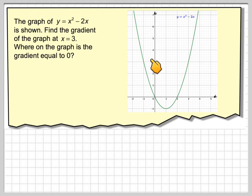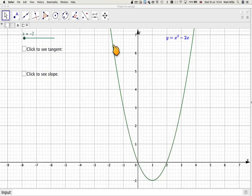So here we've got a graph of y equals x squared minus 2x. Before we look at that, we're going to really look at what we mean by the gradient of a graph, because up to now we've done gradients of straight lines. So here we have y equals x squared minus 2x.